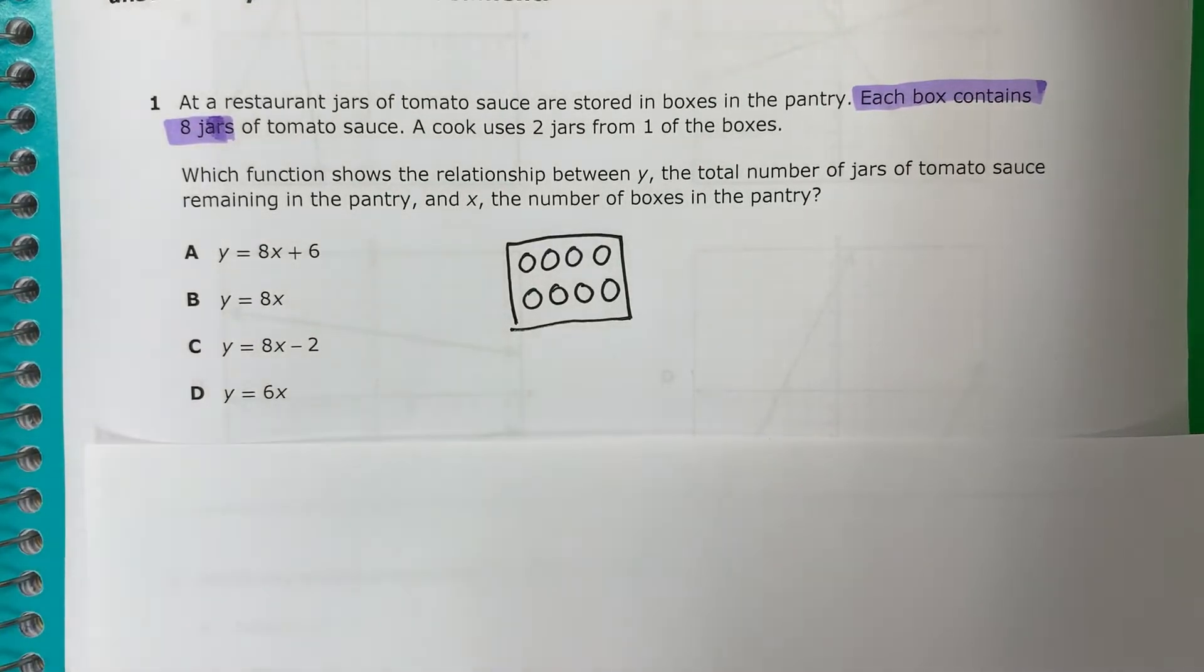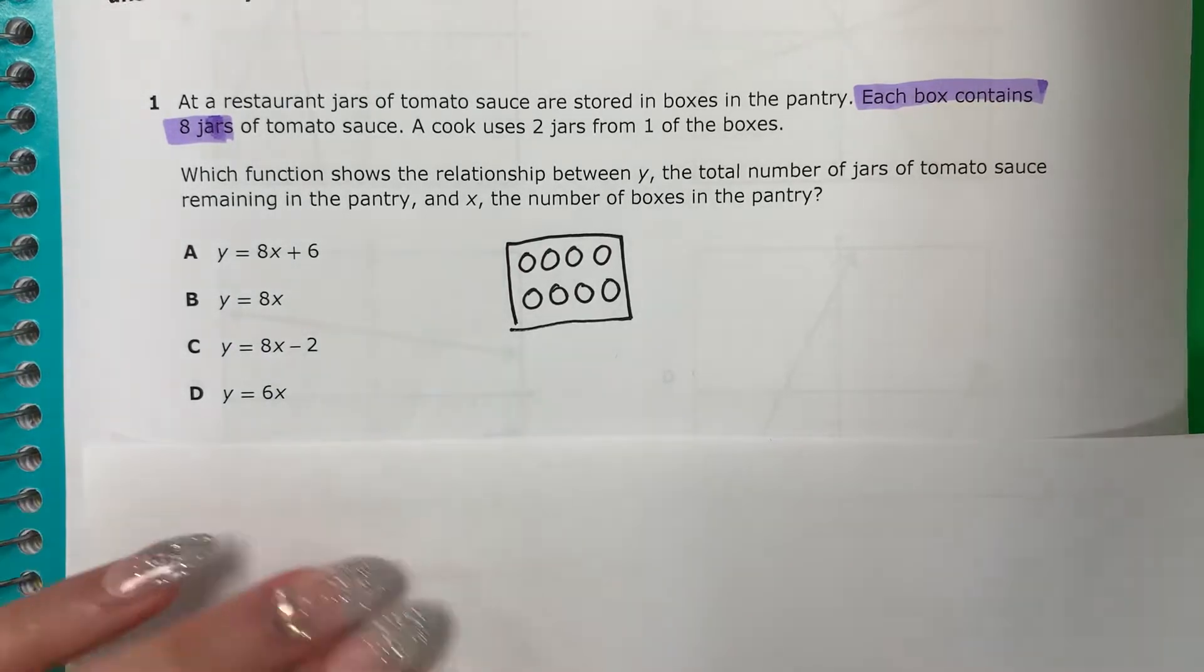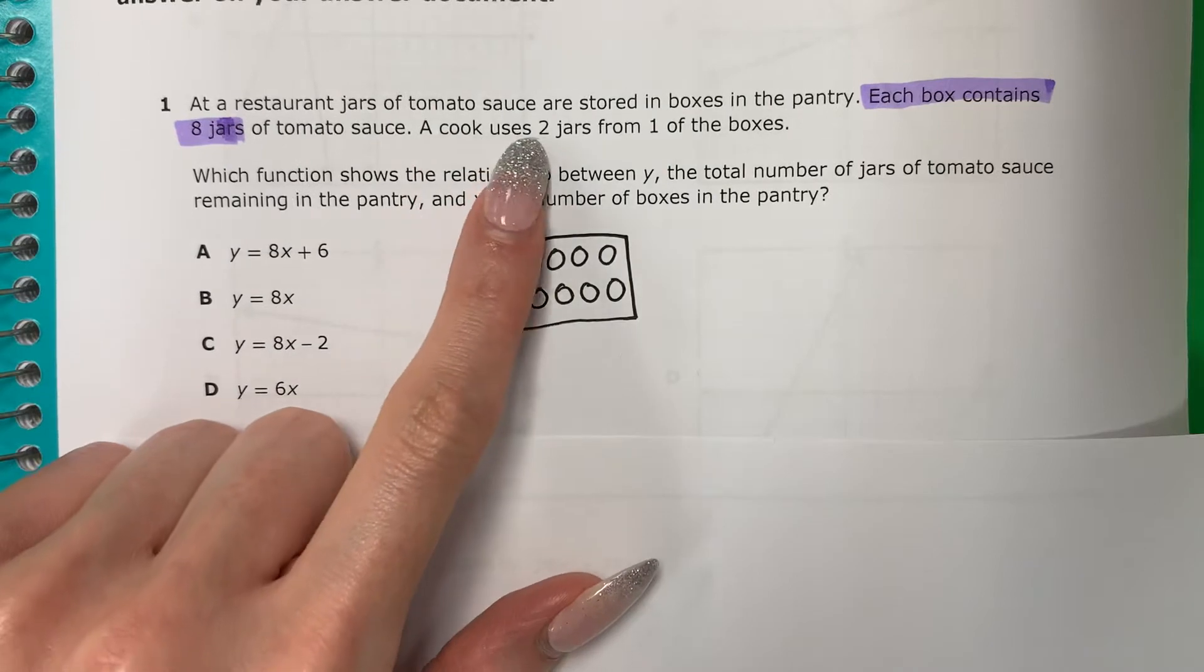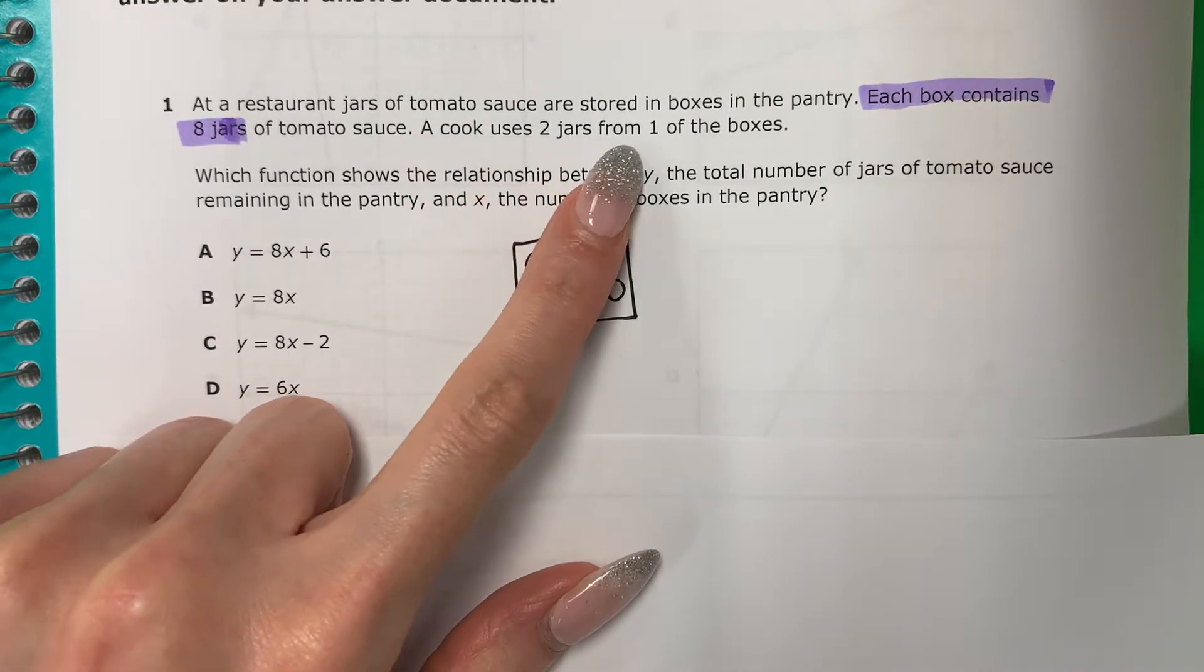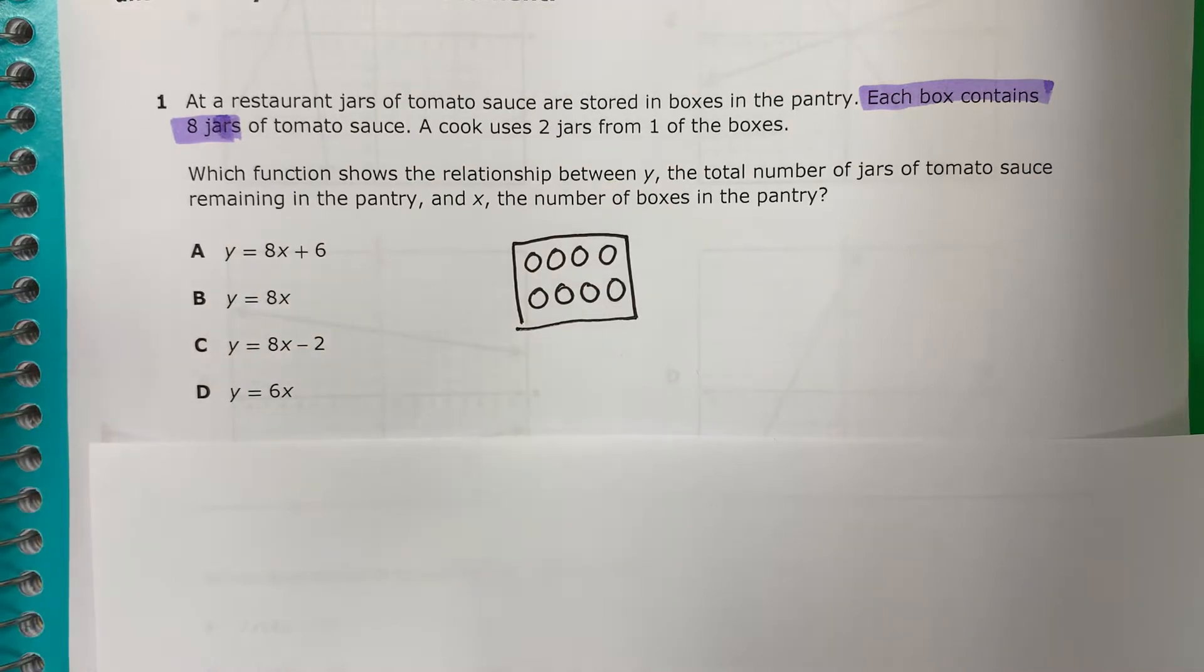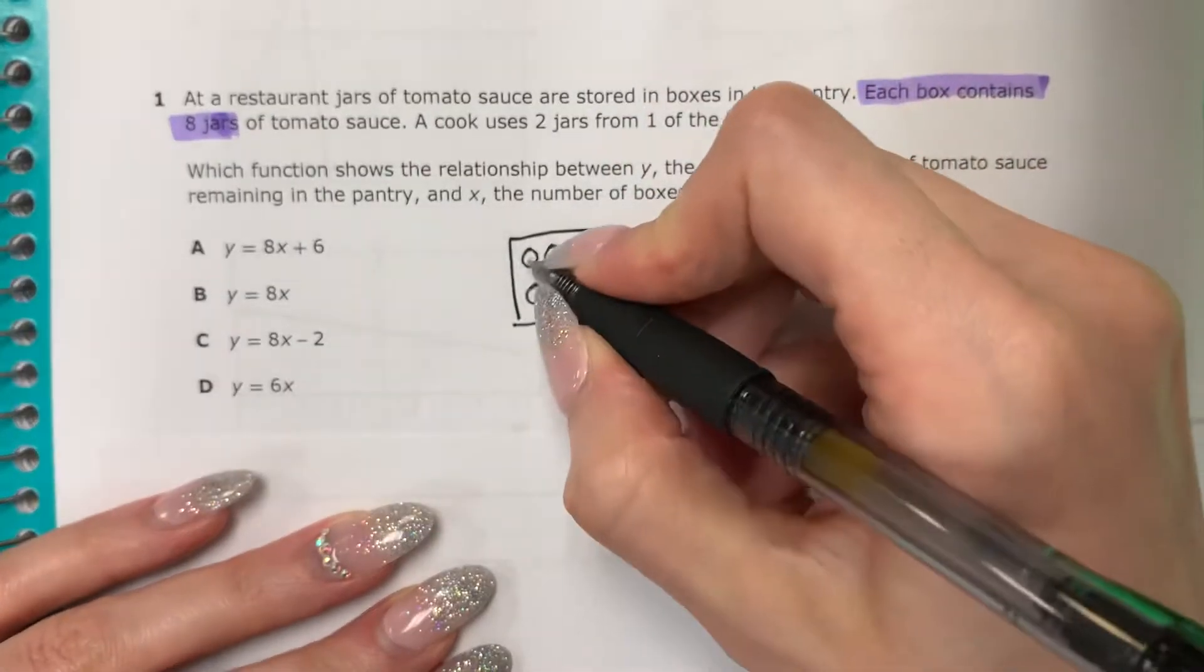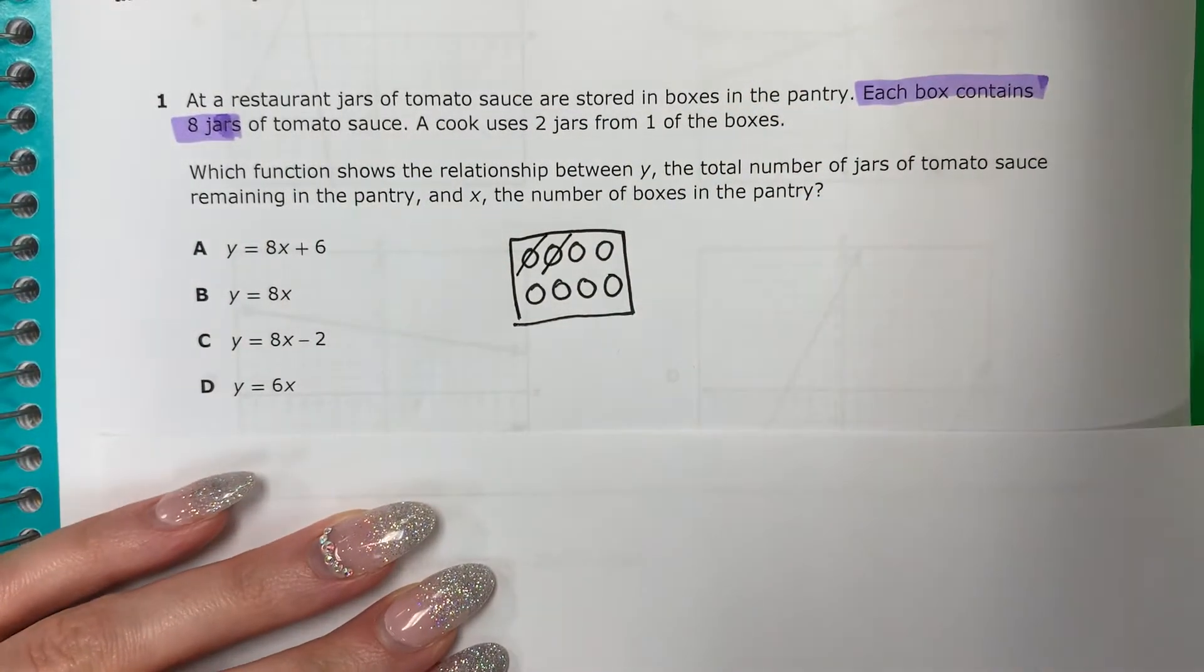I don't know how many boxes. No sé cuántas cajas. But what I do know is that there are 8 jars inside each box. Pero yo sé que hay 8 frascos en cada caja. A cook uses 2 jars from the boxes. Un cocinero usa 2 frascos de una de las cajas. So 2 of them are gone. There's 6 left.